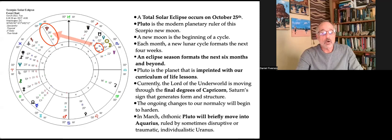The ongoing changes to our normalcy will begin to harden. In March, chthonic Pluto will briefly move into Aquarius, ruled by sometimes disruptive or traumatic individualistic Uranus.